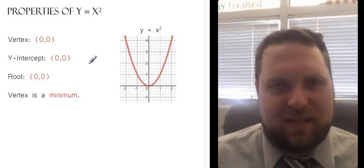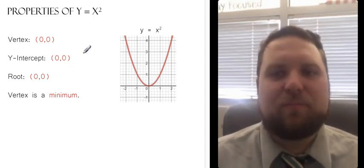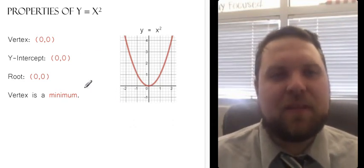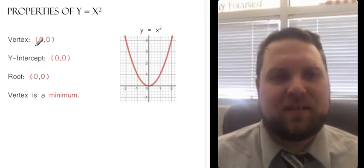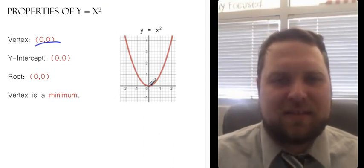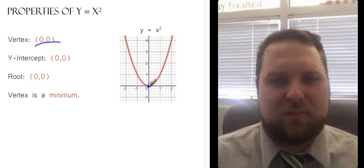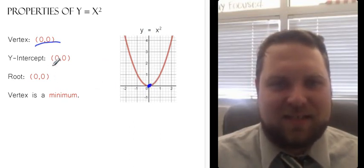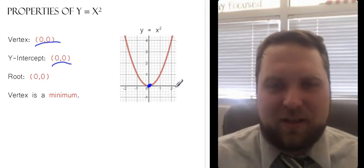So here are the key properties of y equals x squared. Memorize these. They're worth it. So the vertex of y equals x squared is always at (0, 0), the origin, the starting point. And interestingly enough, if we think about the y-intercept, where does it cross the y-axis? At 0. So that vertex is the y-intercept as well.